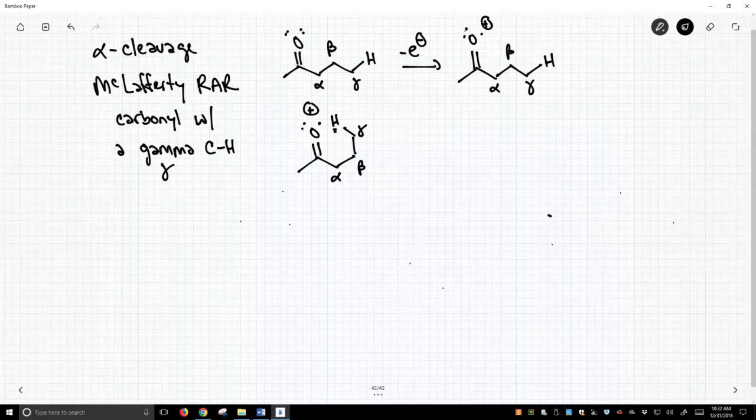And now what happens is we're going to move a bunch of electrons. We're going to use our fishhook arrows to move them, and we're going to make a new OH bond. This bond is going to break between the gamma carbon and the hydrogen. Use those electrons also from the alpha-beta carbon-carbon sigma bond, and we're going to make a new pi bond, and that second electron from the alpha-beta sigma bond is going to end up on the alpha carbon.